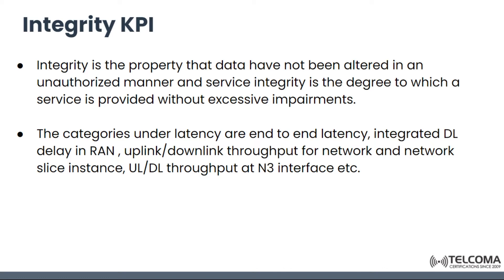Integrity KPI: Integrity is the property that data have not been altered in an unauthorized manner, and service integrity is the degree to which the service is provided without excessive impairments. The categories are under latency — like end-to-end latency, integrated downlink delay in RAN, uplink/downlink throughput for the network and network slice instance, and uplink and downlink throughput at the N3 interface.